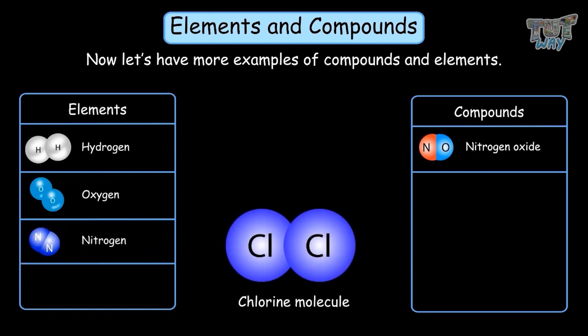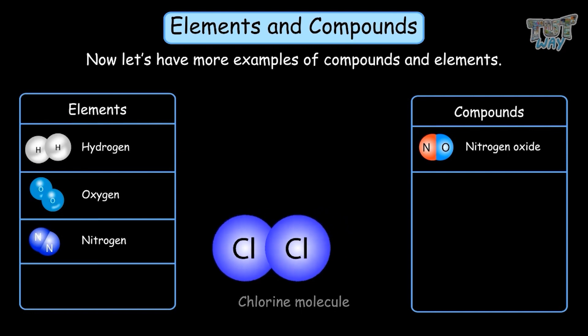Chlorine is also an element, not a compound, because each molecule of chlorine only has chlorine atoms, and the formula is Cl2.